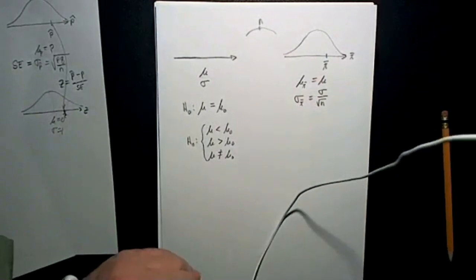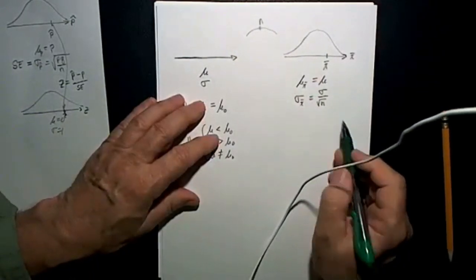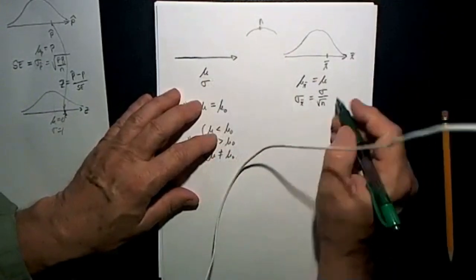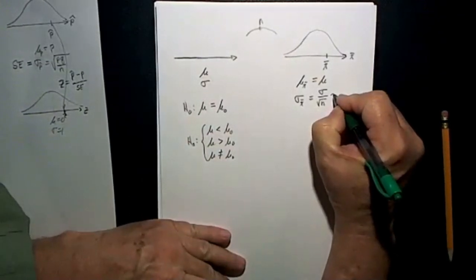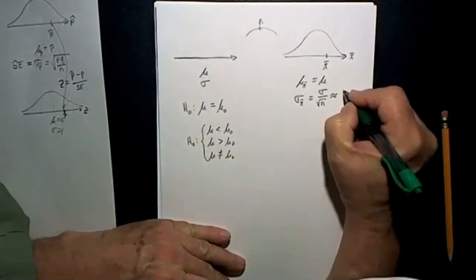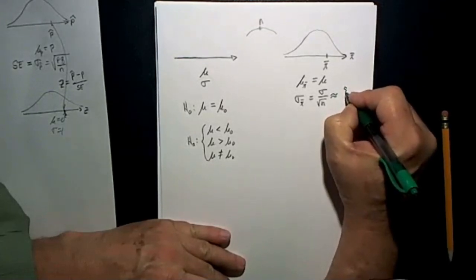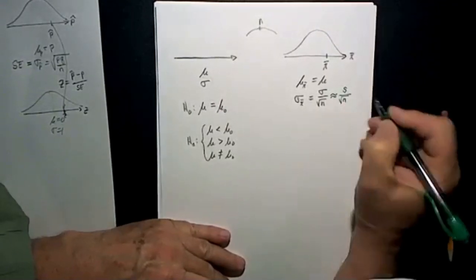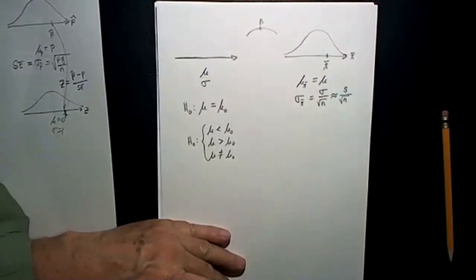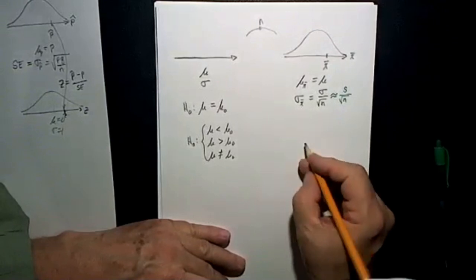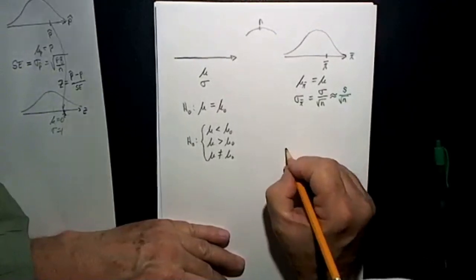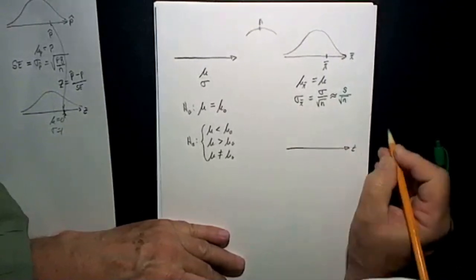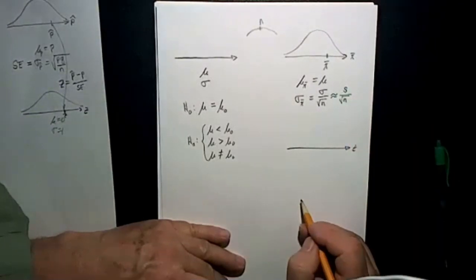Here's another key difference between the two cases. In the mean situation, we seldom know what the population standard deviation is, so we have to approximate it. We approximate that value by using the sample standard deviation divided by the square root of n. Because we're doing that approximation, we use a T distribution instead of a Z distribution to calculate the probability, which helps adjust for any error introduced by that approximation.